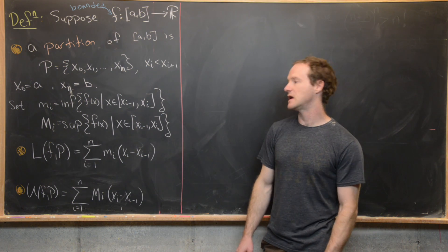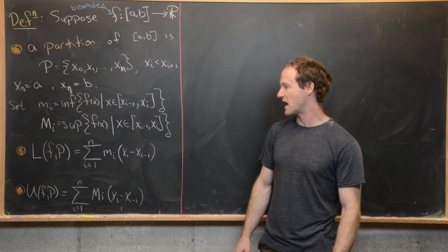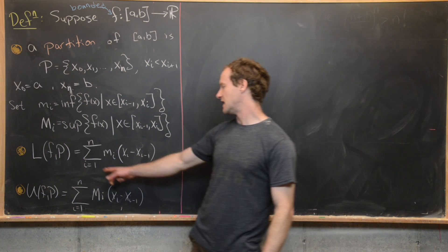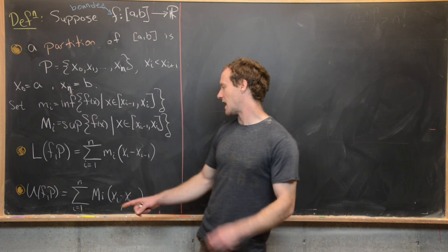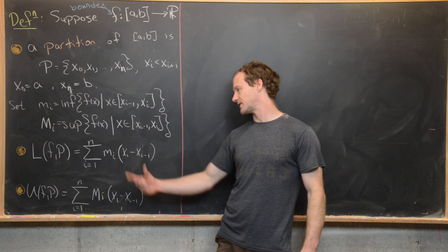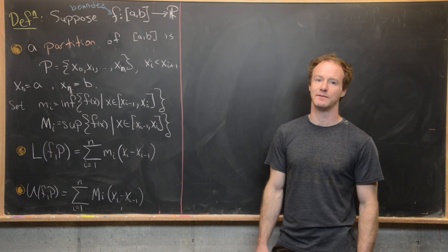So L(f,p), in other words, the lower sum of f with respect to p is the sum as i goes from 1 to n of little m_i times this difference x_i minus x_{i-1}.